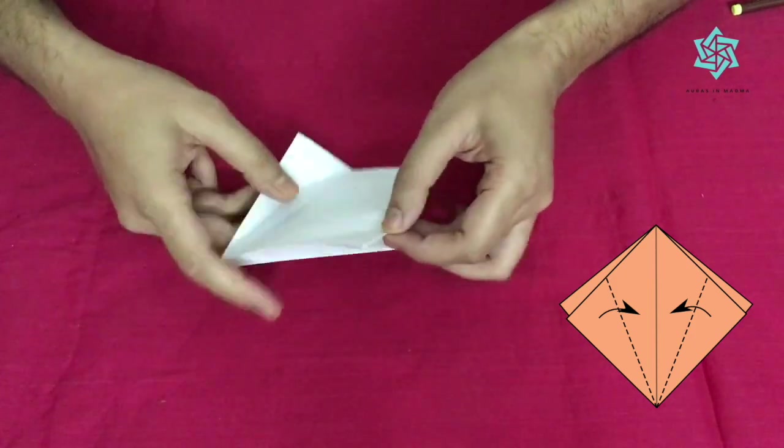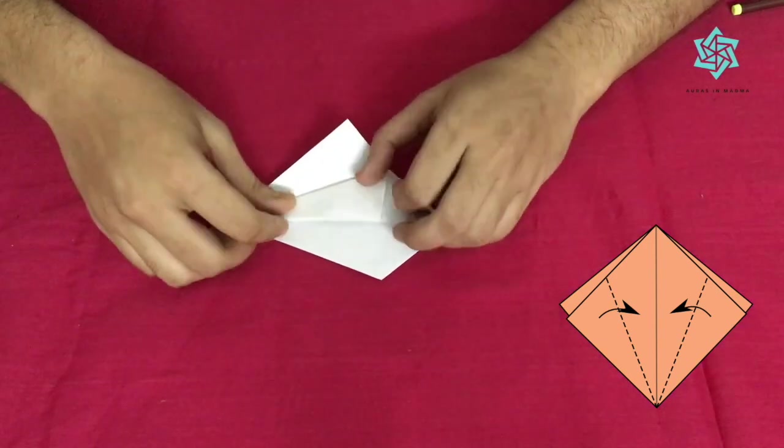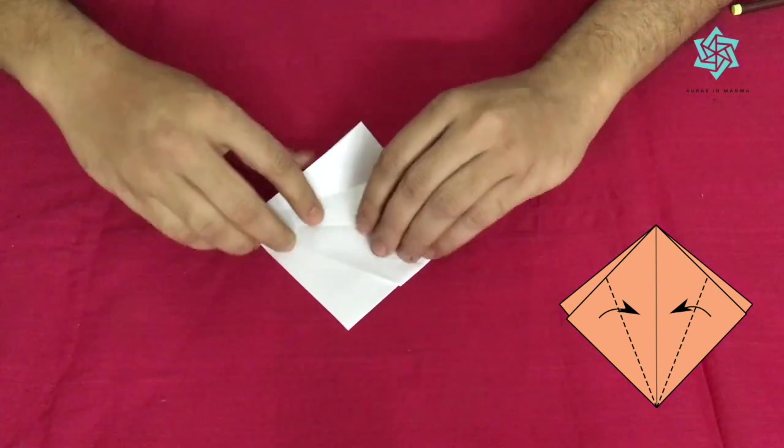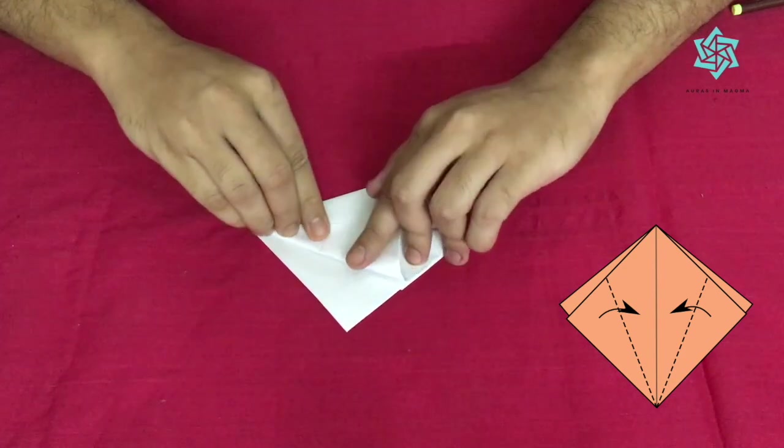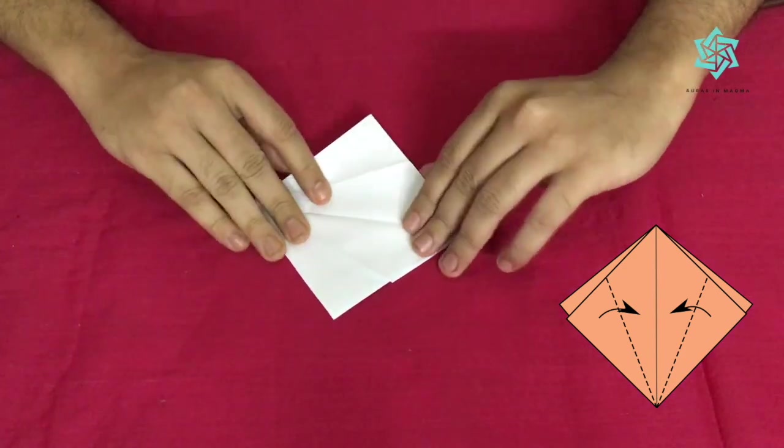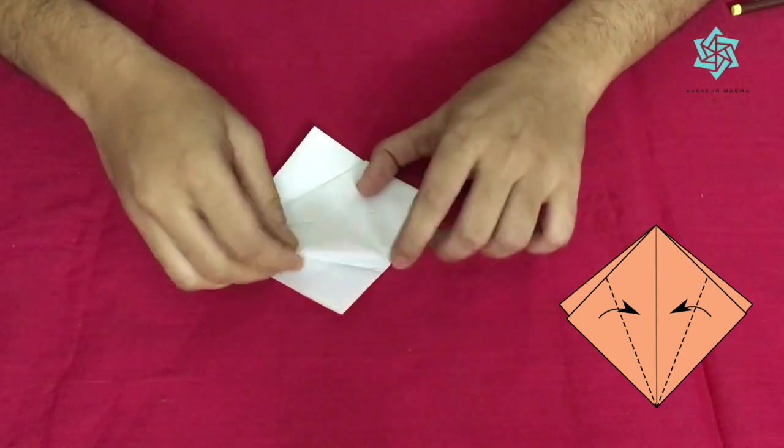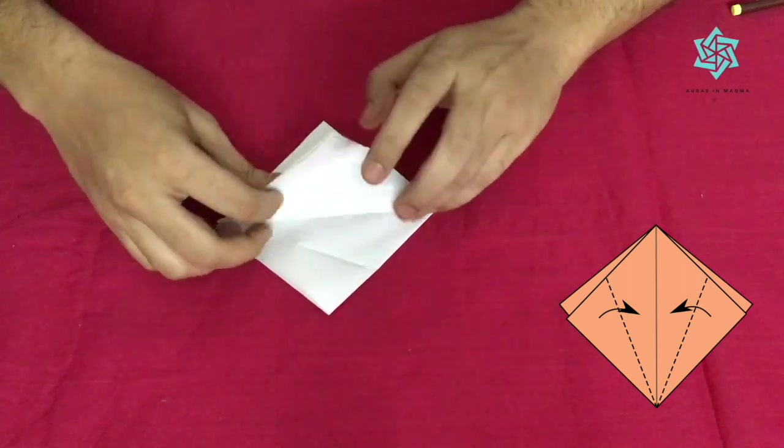Since this is a pre-crease we would actually try to do this in the other direction as well, just to help us fold. Similarly on this direction we'll open this and then we turn and push this back.